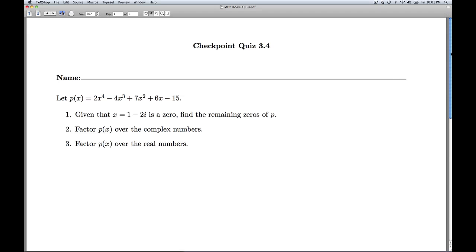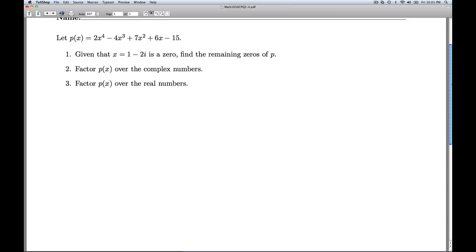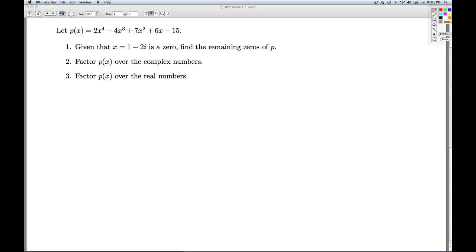Hi folks, this is Checkpoint Quiz 3.4. We're given a polynomial p(x) = 2x⁴ - 4x³ + 7x² + 6x - 15. At number one, we're given that x = 1 - 2i is a zero. We're asked to find the remaining zeros of p, and once we have the zeros, we're asked to factor the polynomial over the complex numbers and then over the real numbers.